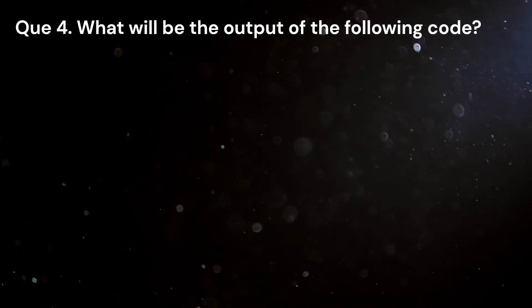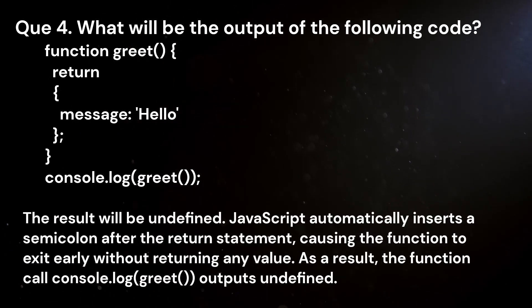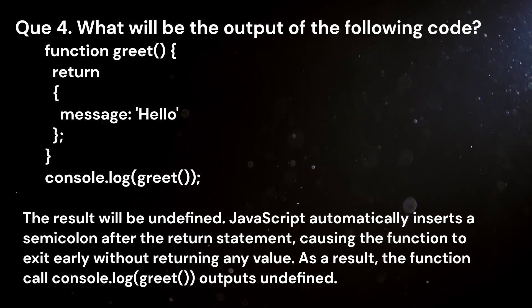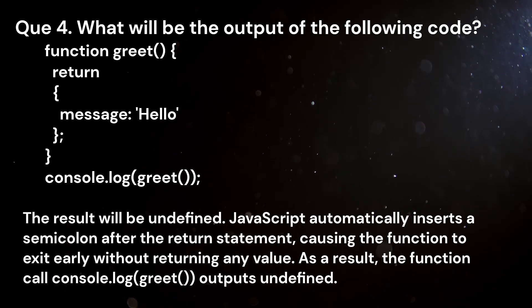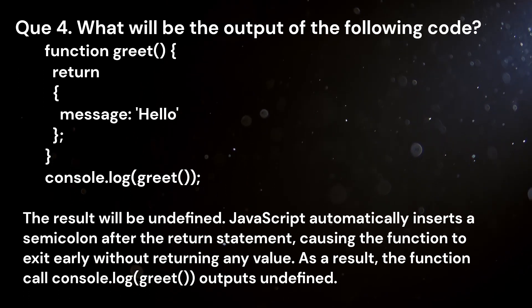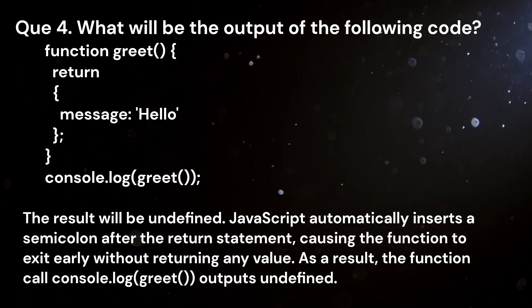Question 4. What is the result of the following code? Answer. The result will be undefined. JavaScript automatically inserts a semicolon after the return statement, causing the function to exit early without returning any value. As a result, the function call console.log(greet()) outputs undefined.